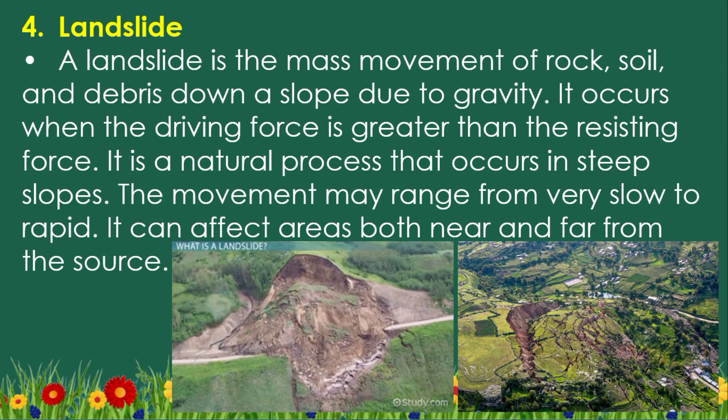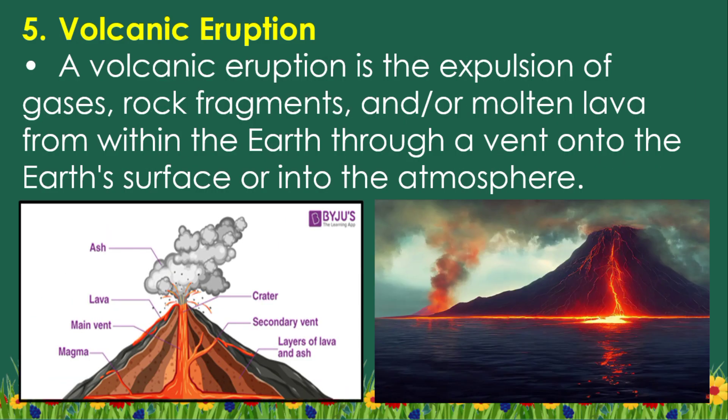Type 4: Landslide. A landslide is the mass movement of rock, soil, and debris down a slope due to gravity. It occurs when the driving force is greater than the resisting force. It is a natural process that occurs in steep slopes; the movement may range from very slow to rapid, and it can affect areas both near and far from the source.